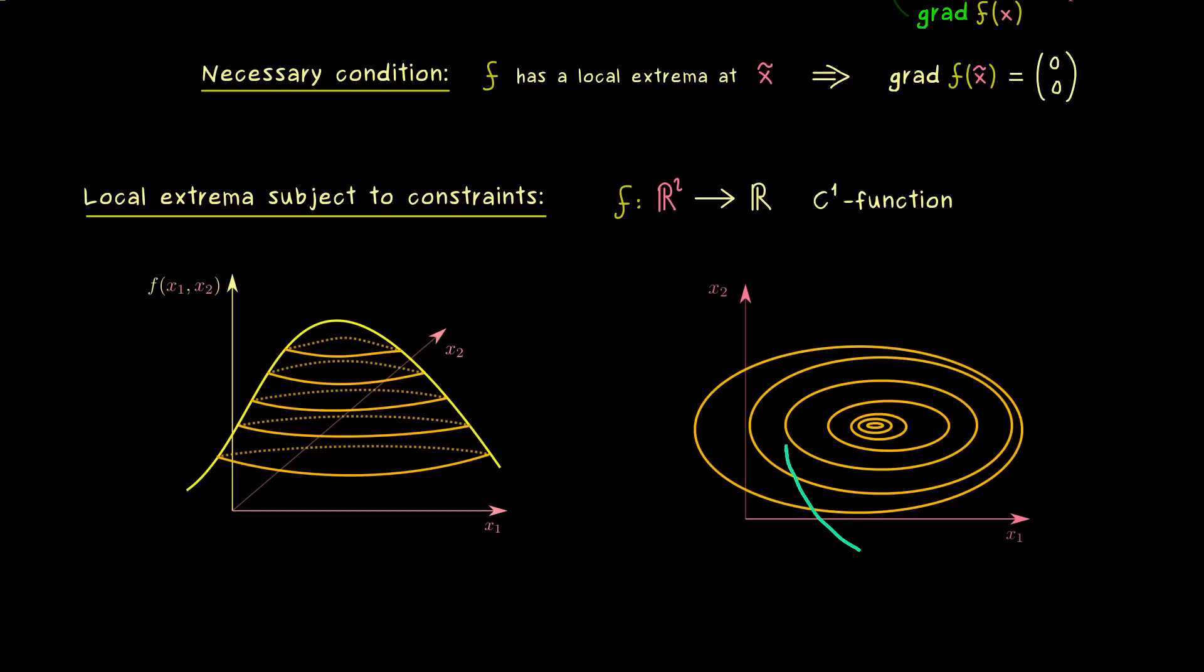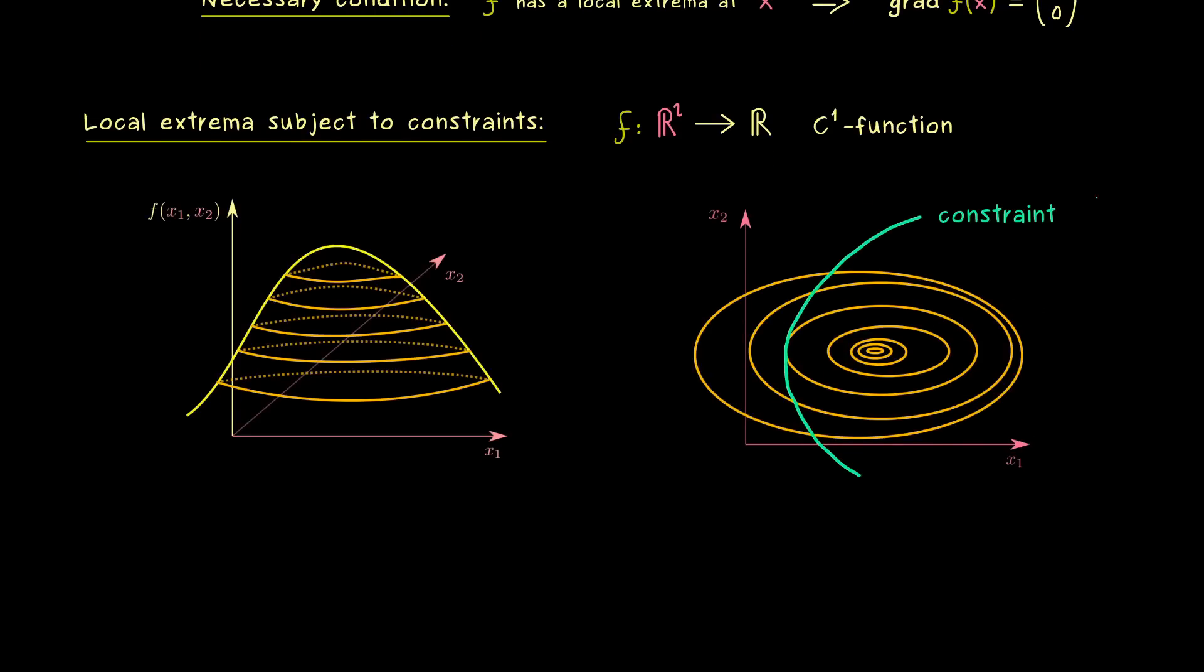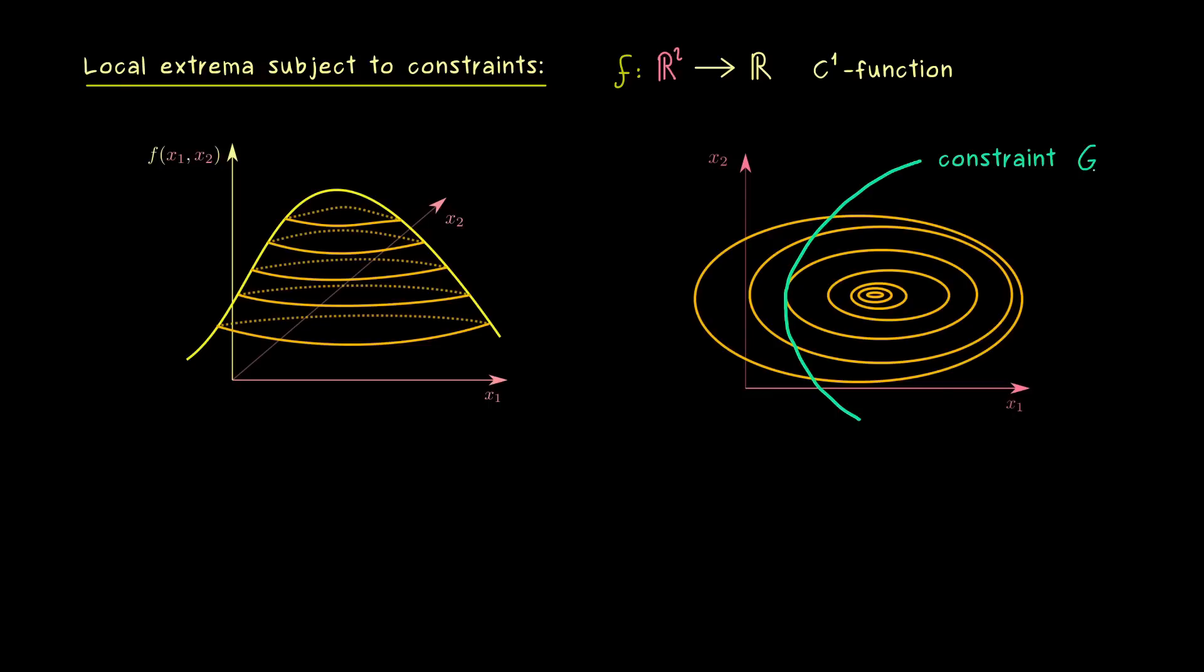So there we have the whole domain of f given as R². But now we want to restrict it to this curve. In other words, this is our given constraint, and let's call this set capital G. What we will do now is to restrict the function f to this new set G, and then we will ask about local extrema of this new function.